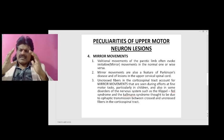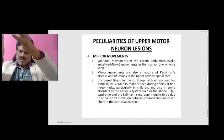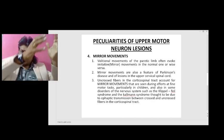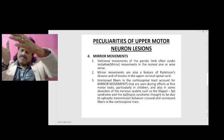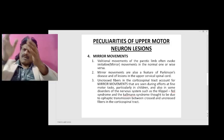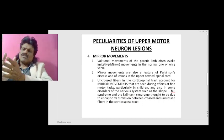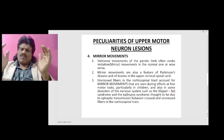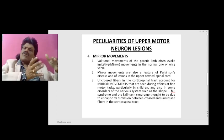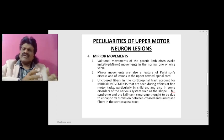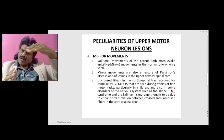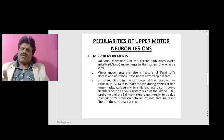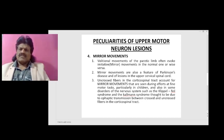But why exactly do they occur? At the level of the medulla oblongata, the corticospinal tract crosses — about 80 to 90 percent of fibers cross, but about 10 to 20 percent do not cross. There may be a haptic connection between the crossed corticospinal tract and the uncrossed corticospinal tract, resulting in these peculiar mirror movements.